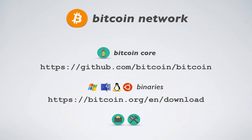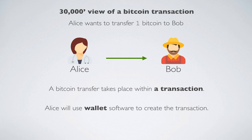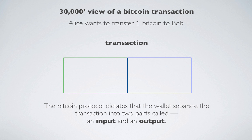So let's look at an actual use case example. Alice wants to transfer one Bitcoin to Bob. The Bitcoin protocol dictates that this transfer be done in what's called a transaction. Alice will use wallet software to create the transaction. The protocol data structure requirements prescribe that the wallet separate the transaction into two parts: an input and an output.